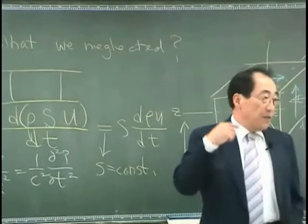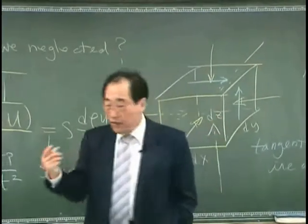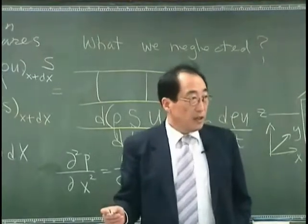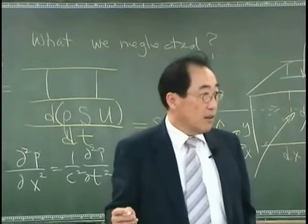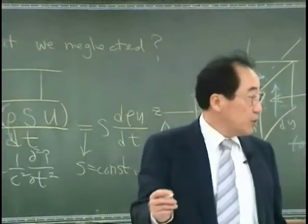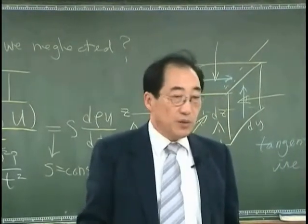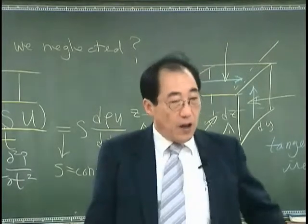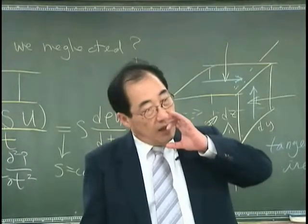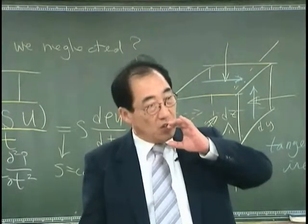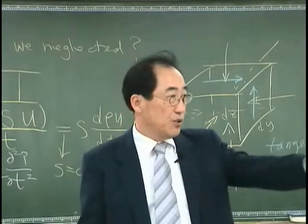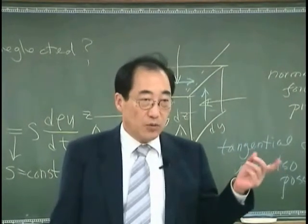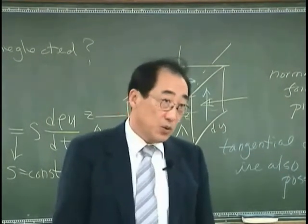If the waves we are making obey this governing equation, then we can communicate with people in the United States from here, right? If I have a conduit or duct connected from here to the United States, then I can send my signal to the United States or Russia because there is no damping.